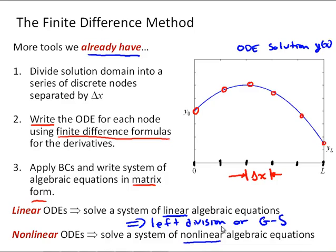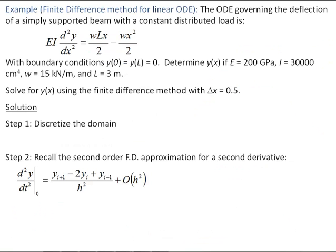So this is our basic strategy. How it works is going to be problem specific, so let's look at an example problem. Here's that same differential equation describing the deflection of a simply supported beam with a constant distributed load and the same boundary conditions. We're going to solve this using the finite difference method with discrete values at delta x equals 0.5. The first step is to discretize the domain.